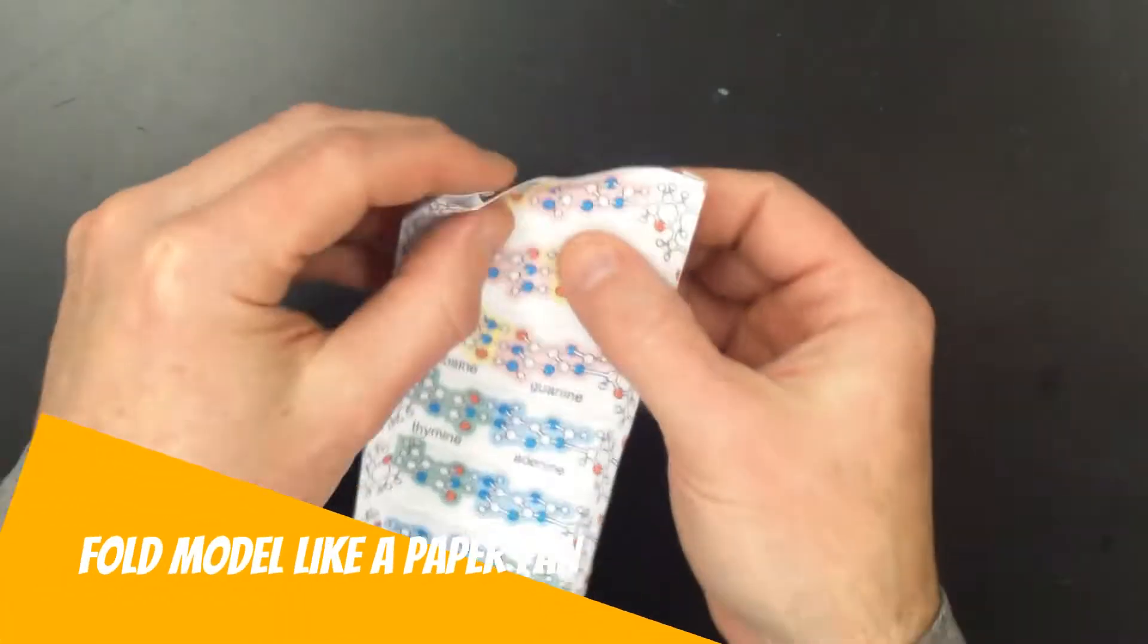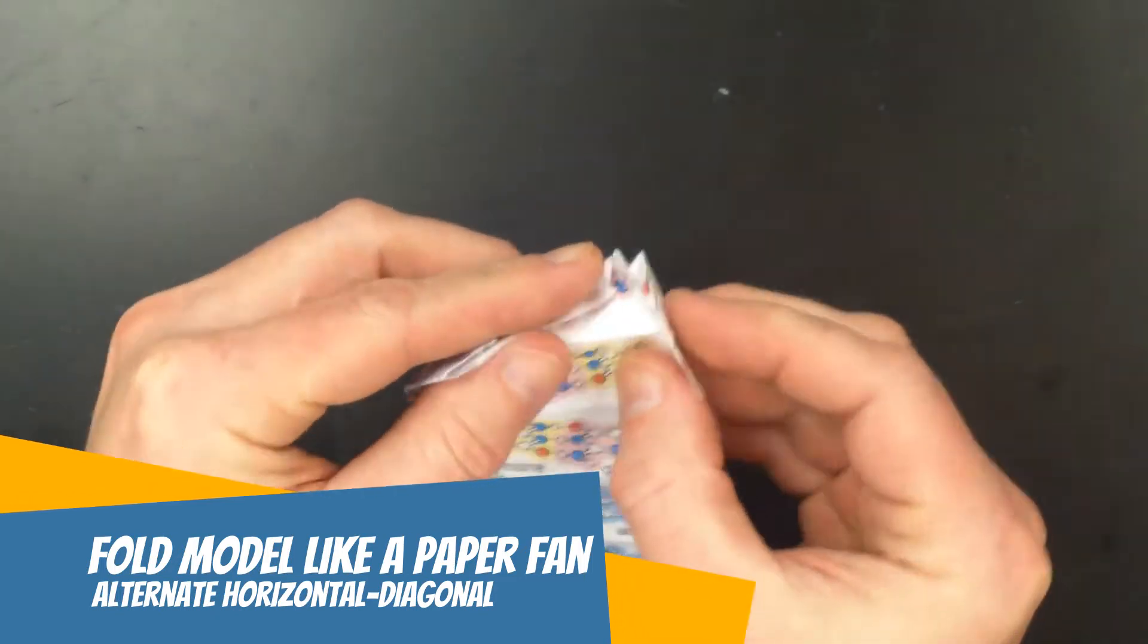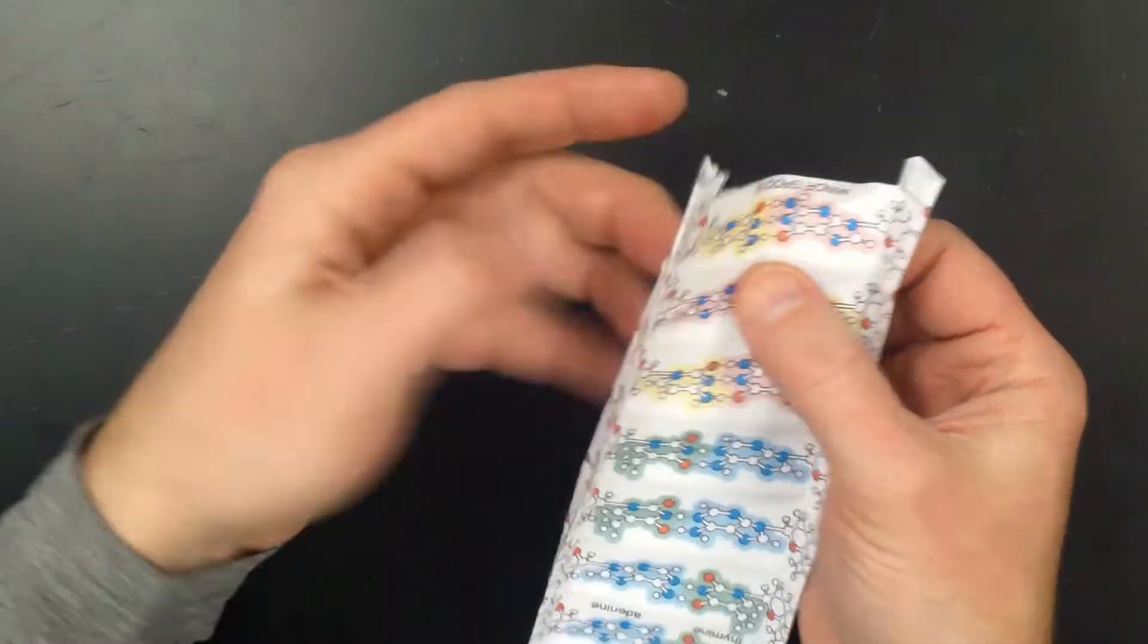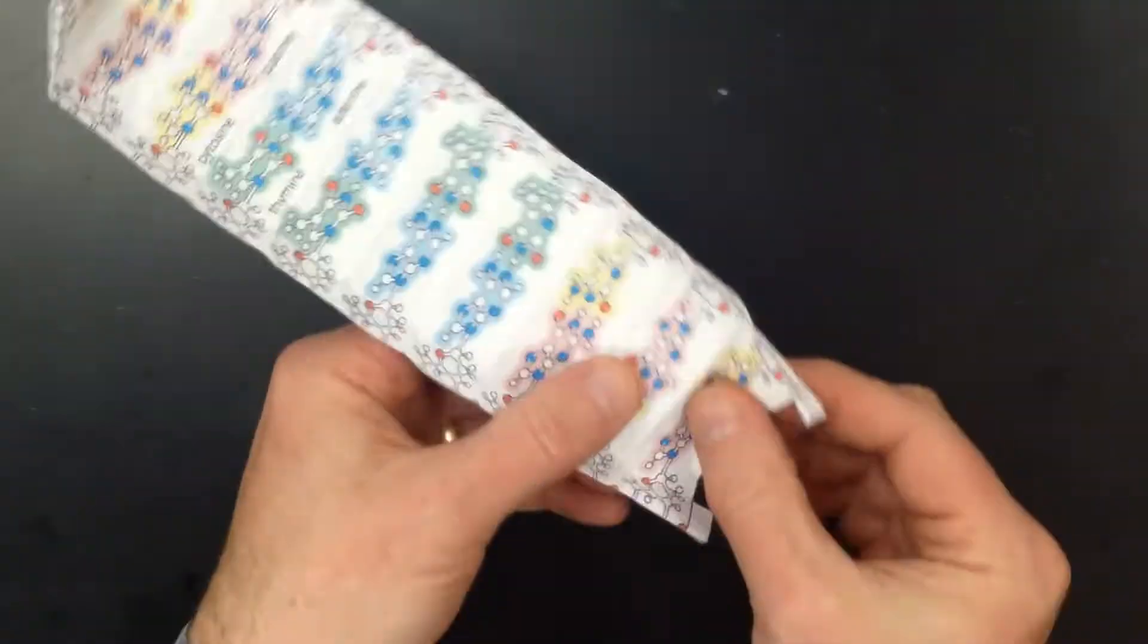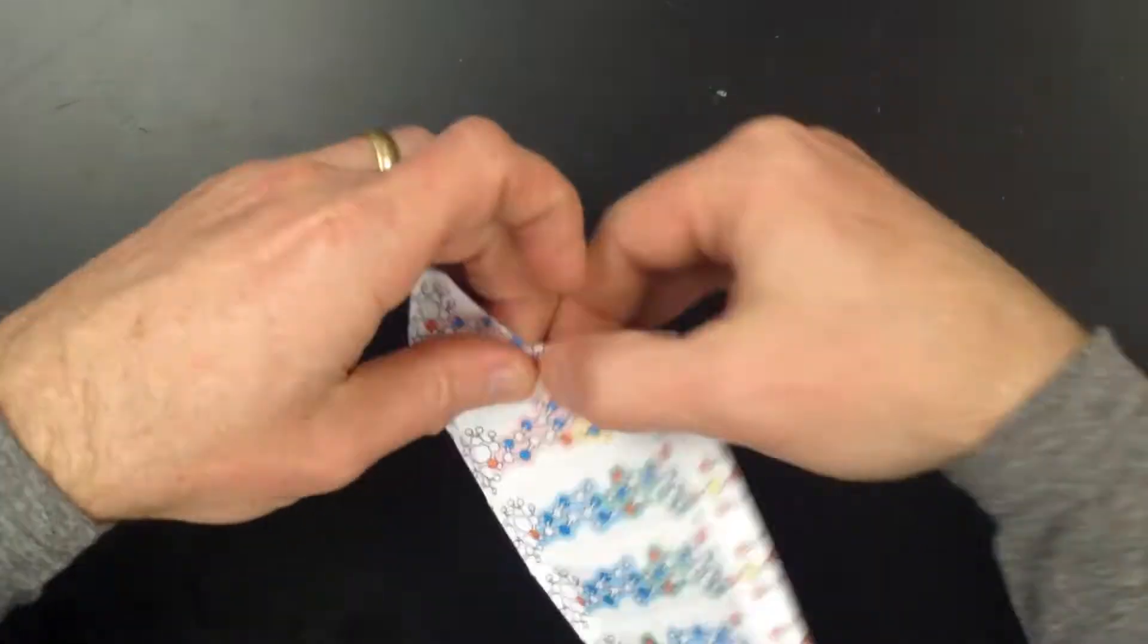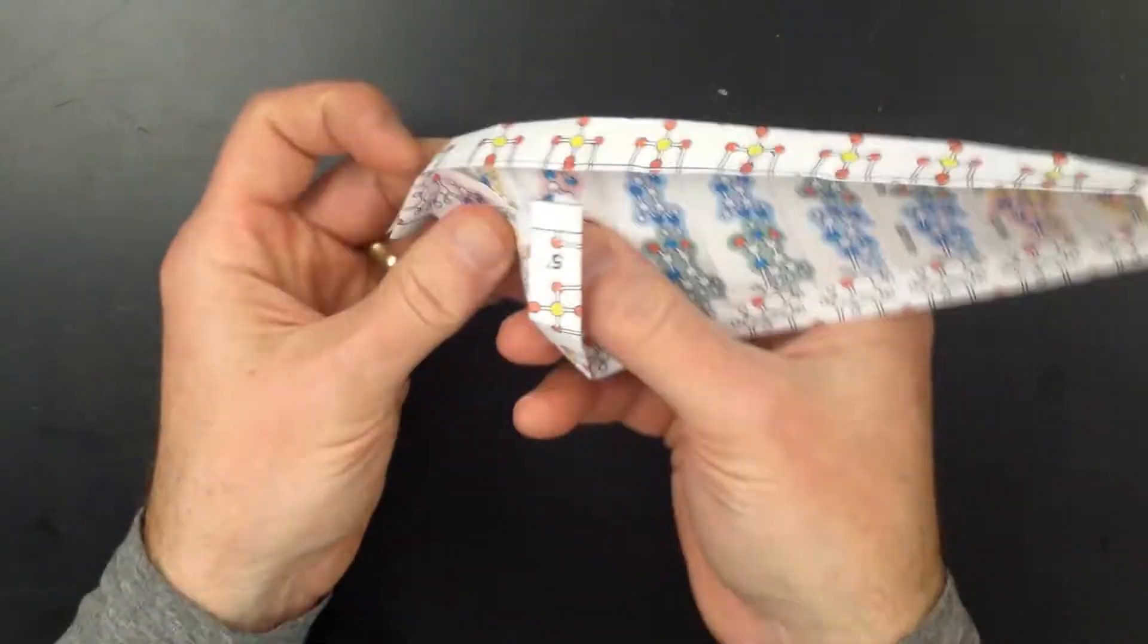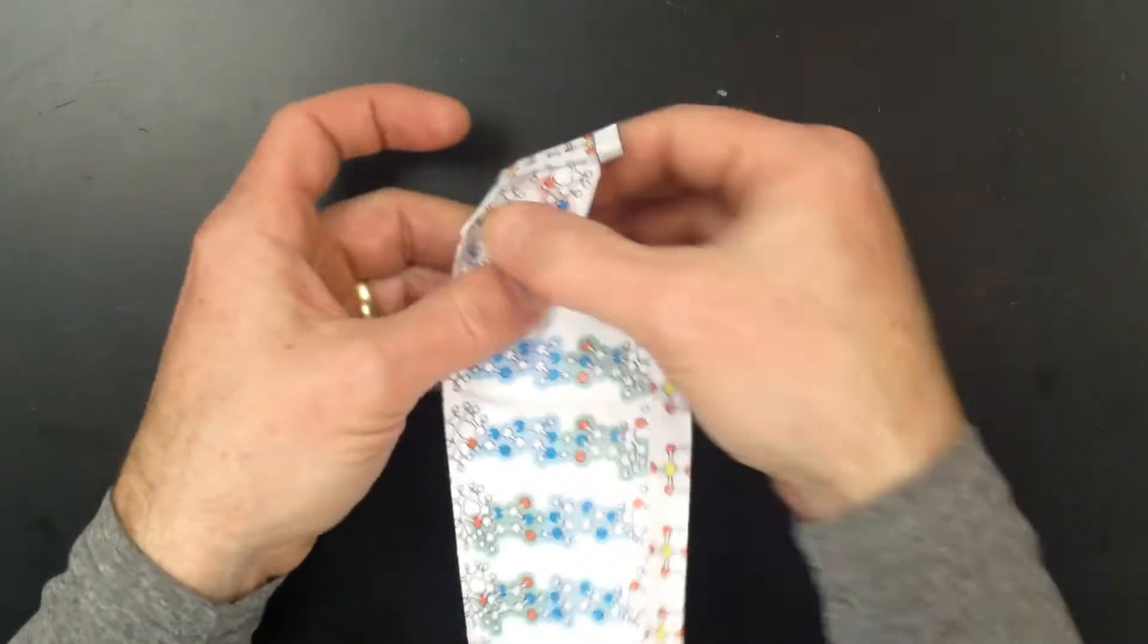To finalize the double helix structure you will need to alternate folding horizontal and diagonal ladder creases, almost like folding a paper fan. You can do this from either end and eventually your model should look like a wheel.